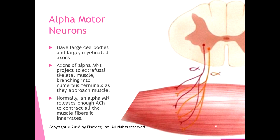Axons of alpha motor neurons project to extrafusal skeletal muscle fibers, branching into numerous terminals as they approach the muscle. As shown in a simplified diagram, alpha motor neurons branch out and innervate individual muscle fibers. Normally, an alpha motor neuron releases enough acetylcholine to contract all of the muscle fibers it innervates at once. At the neuromuscular junction it's always an excitatory post-synaptic potential, so the message coming down an alpha motor neuron releases enough acetylcholine to contract all those muscle fibers.